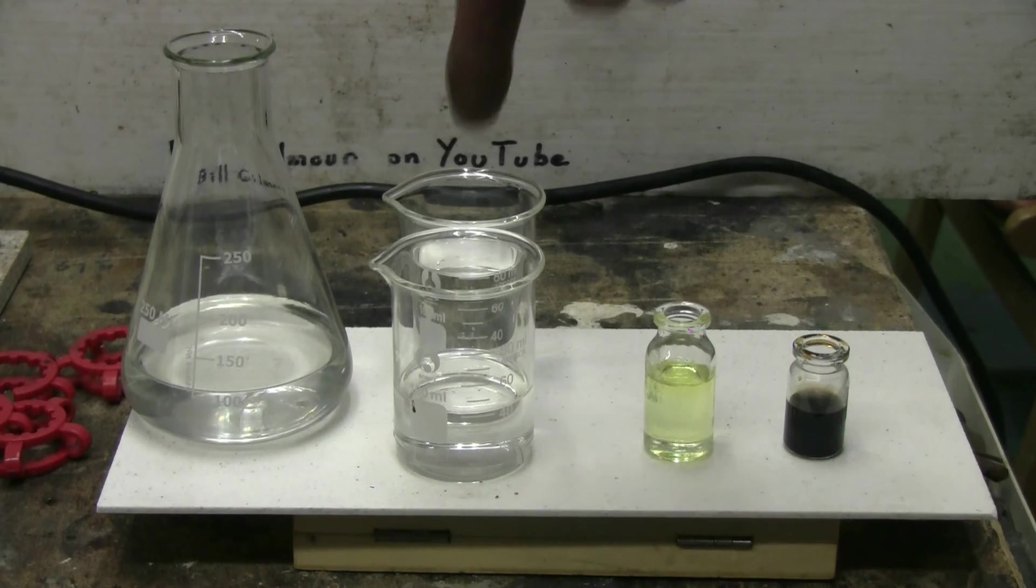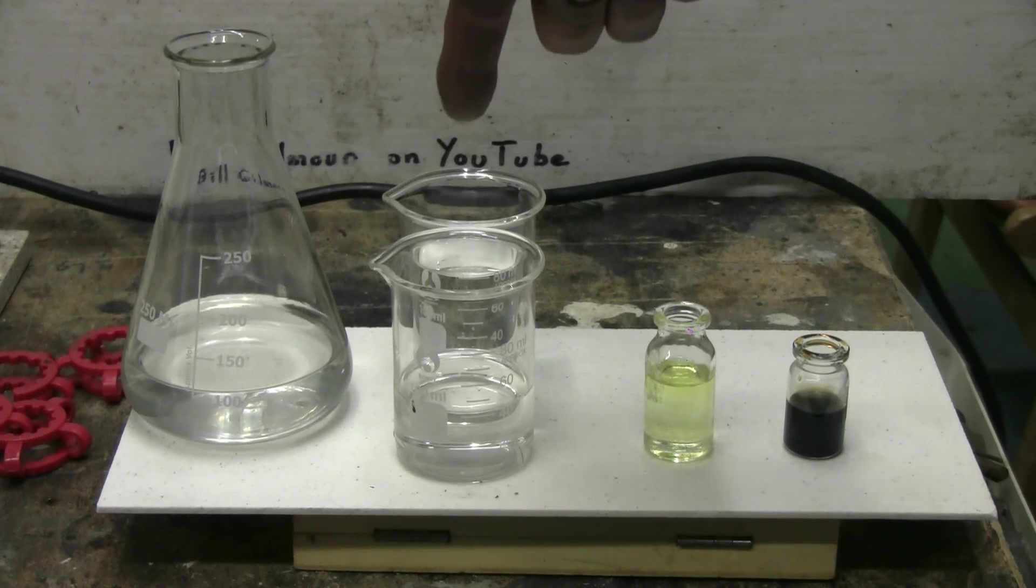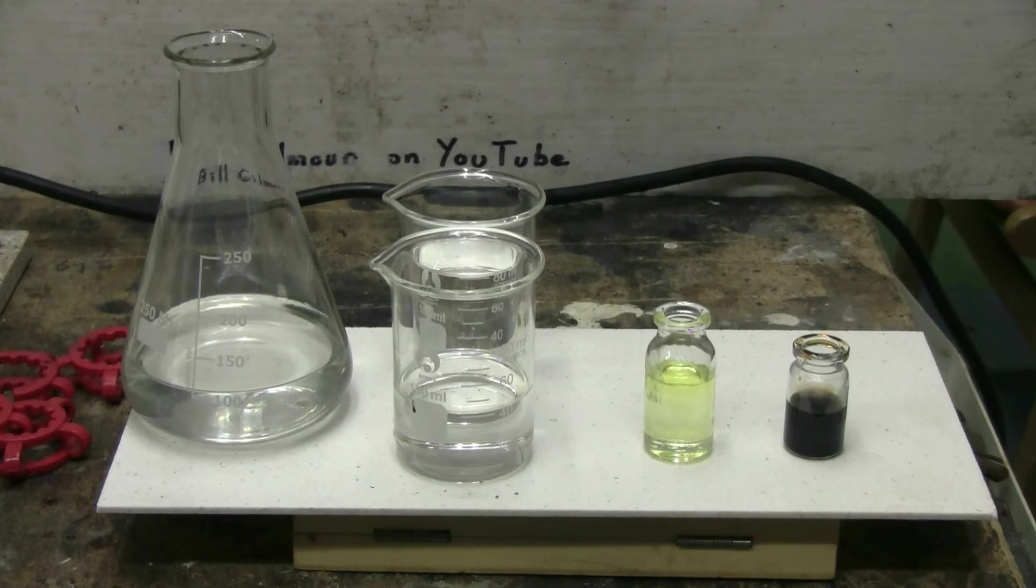The next fraction to come off is in these two small beakers here. This is my beta-pinene. It came across at around 164 to 169 Celsius.